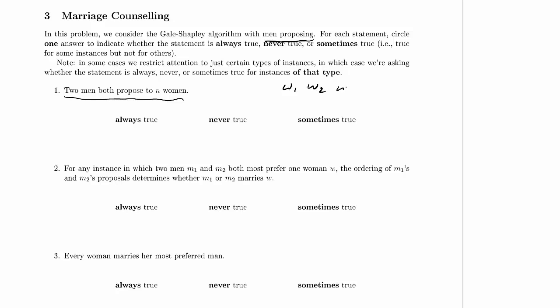Here's their list: w-1, w-2, w-3, ... w-n. We can assume one of the men has the women in that order. All of these women have rejected this man, which means they all have to be married. Once a woman is engaged in the algorithm, she never becomes unengaged. When the algorithm ends, she marries whoever she ends up engaged to. So all of those previous women are engaged when this man proposes to w-n.